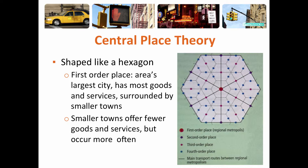Christaller described the largest places as first order places — usually an area's largest city that has the most goods and services and is surrounded by many smaller towns. Smaller towns offer fewer goods and services but occur more often. As you can see, there are second order, third order, and fourth order places surrounding the city or Central Place.